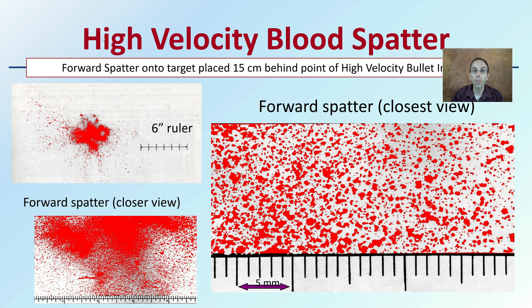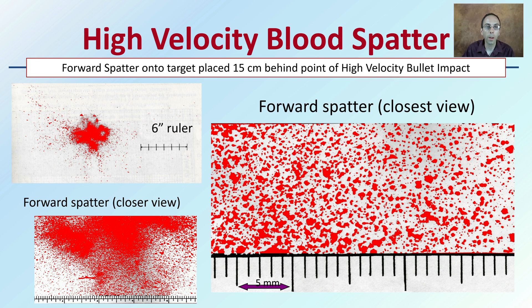This high velocity blood spatter — forward spatter — has a target placed 15 centimeters behind the point of high velocity impact. The forward spatter is shown in the closest view, giving an appreciation for the fine mist that occurs and the varying amounts depending on whether it originates from an entry or exit wound.